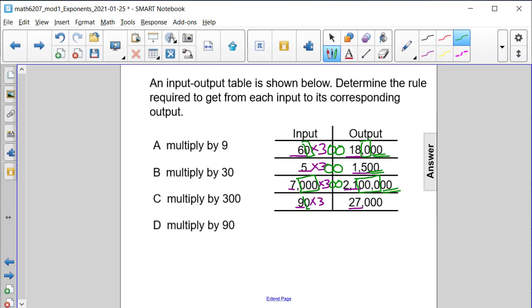90 has one zero, and 27,000 has three. So the first zero is taken care of by the 90, leaving us with two extra. So if we change three to 300, it does indeed work for every single input-output pairing that we have.